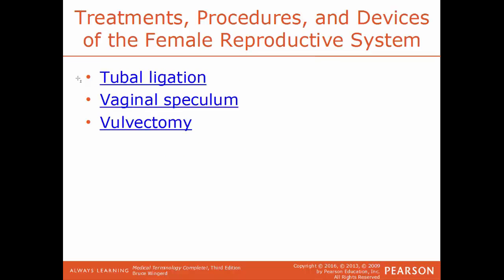Salpingostomy is the creation of an artificial opening into the fallopian tube, done to unblock a fallopian tube. Sonohysterography is a technique where fluid is injected into the cervix of the uterus and ultrasound shows how well the fluid is infused inside. Transvaginal sonography uses ultrasound to examine the uterus, ovaries, and cervix through the vagina. Tubal ligation is the formal name for when a woman has her tubes tied — the same process as a vasectomy in males but done to the fallopian tubes. A vaginal speculum widens the opening to the vagina to see the cervix more easily. Vulvectomy is the surgical removal of part or all of the vulva.